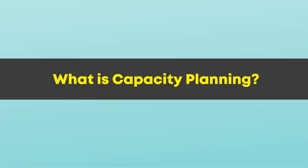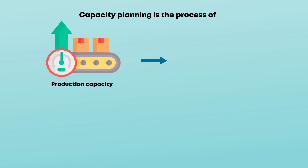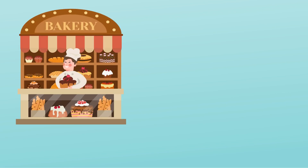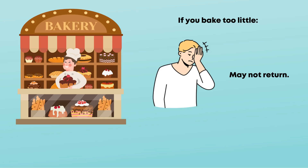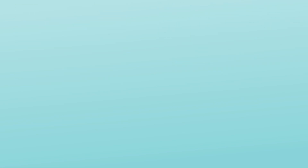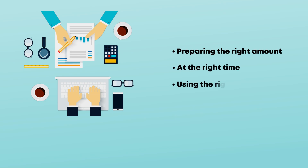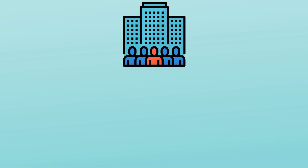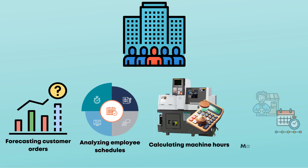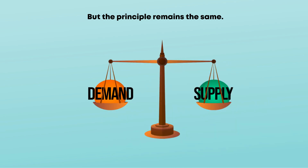What is capacity planning? Capacity planning is the process of determining the production capacity needed by an organization to meet changing demands for its products or services. Imagine you're running a small bakery. If you bake too little, people leave disappointed and may not return. If you bake too much, the bread goes unsold and wasted. This is where capacity planning helps — it guides you in preparing the right amount at the right time using the right resources. In large organizations, this could involve forecasting customer orders, analyzing employee schedules, calculating machine hours, or managing supplier timelines. The principle remains the same: matching supply with demand efficiently.